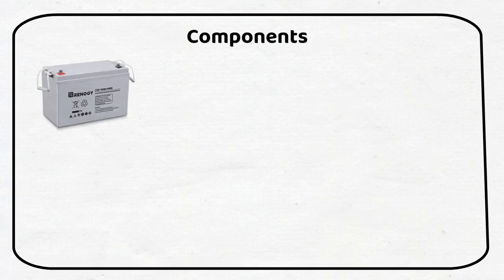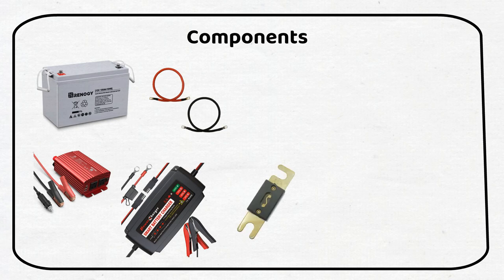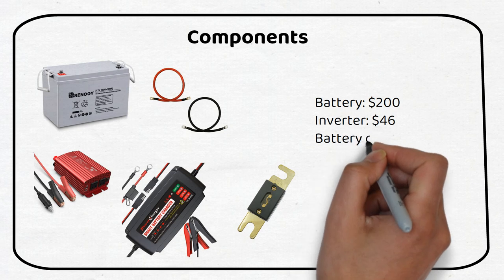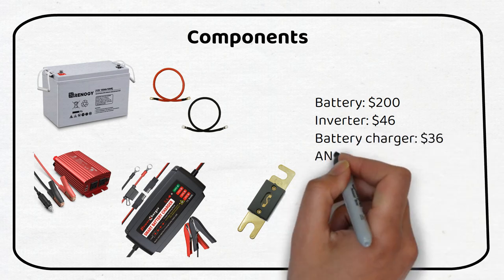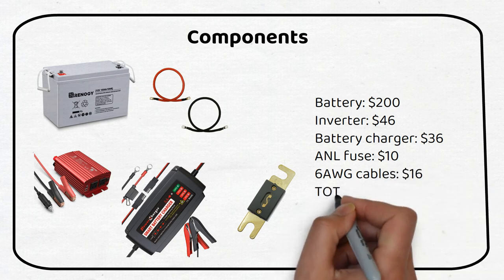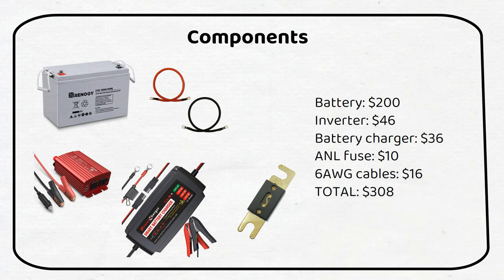Here is a list of the components you need to make the system. I have chosen a battery from Renogy which will cost you 200 dollars. The inverter has good feedback online and will cost you 46 dollars. The 5 amp battery charger will cost you 36 dollars.